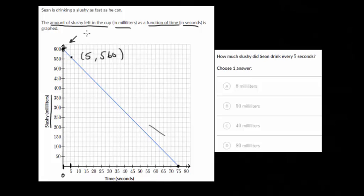We know that at zero seconds, there are 600 milliliters of slushy left. So that's very clear to us. But let's go along our line and see if we can see where it might intersect this grid at a corner.